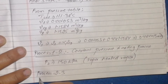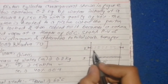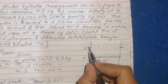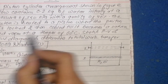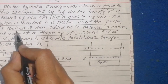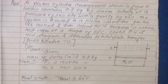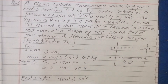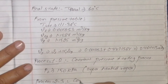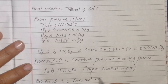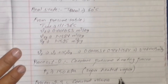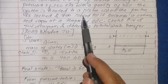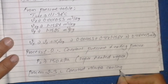Process 2 to 3: the piston is locked. Because the piston is locked, this is a constant volume process — a constant volume cooling process.